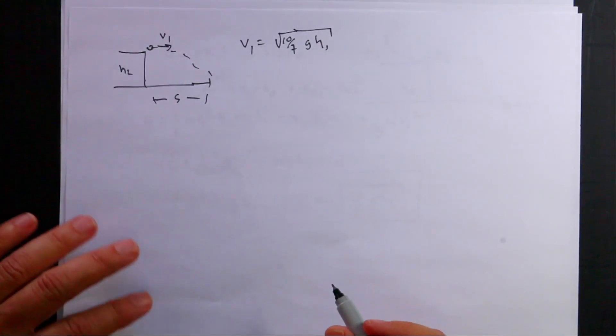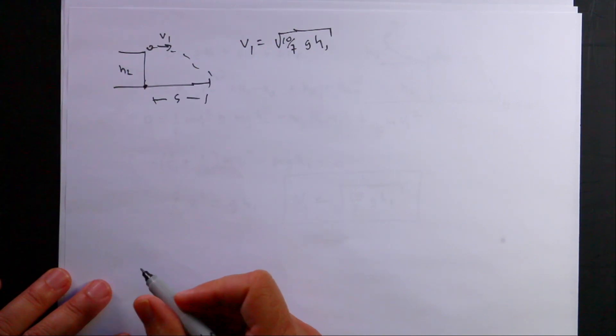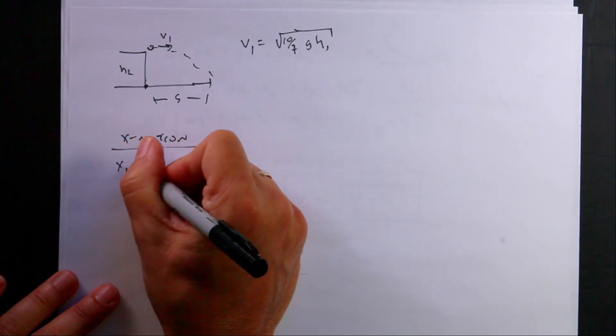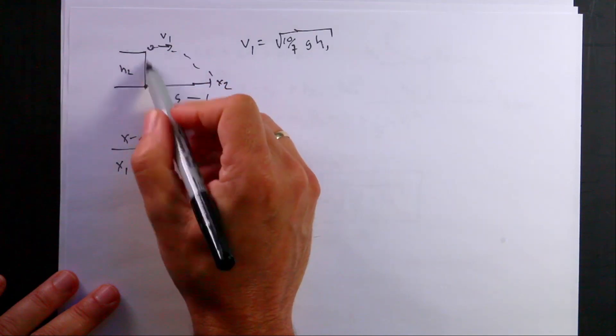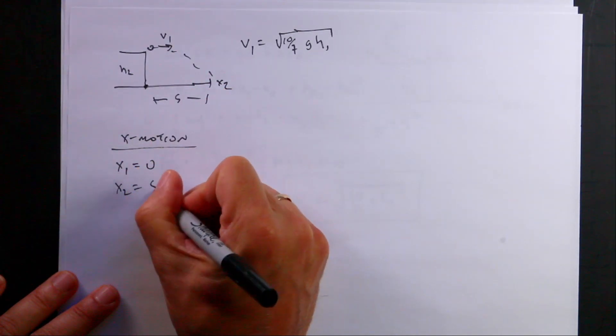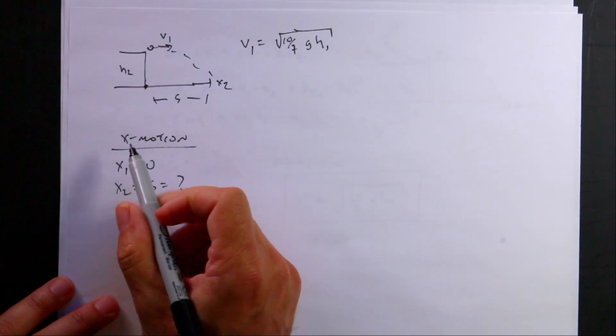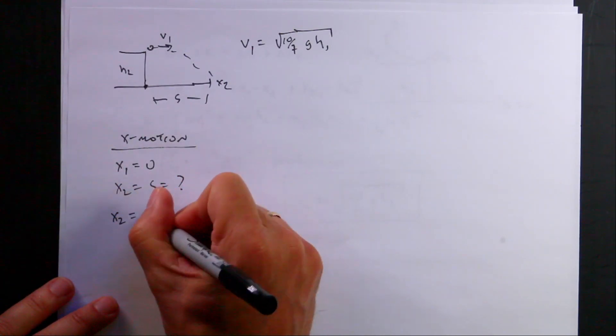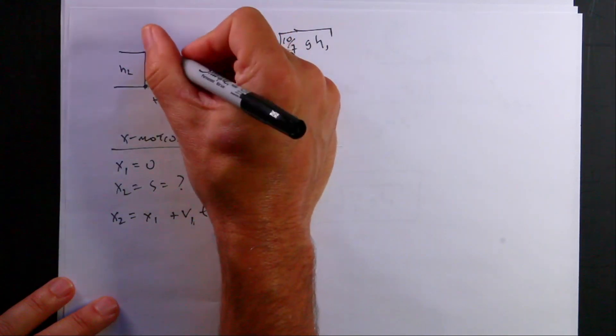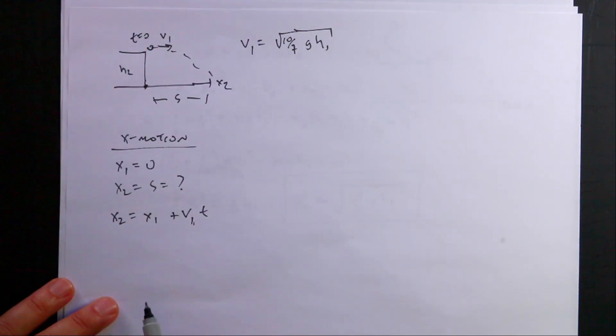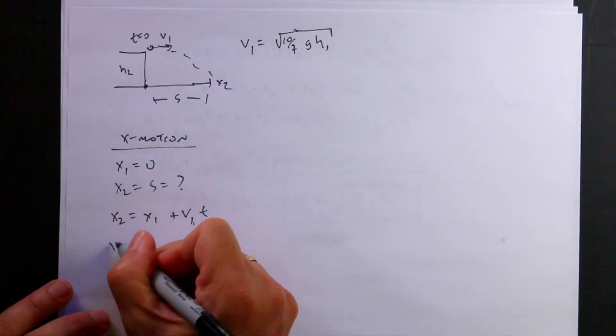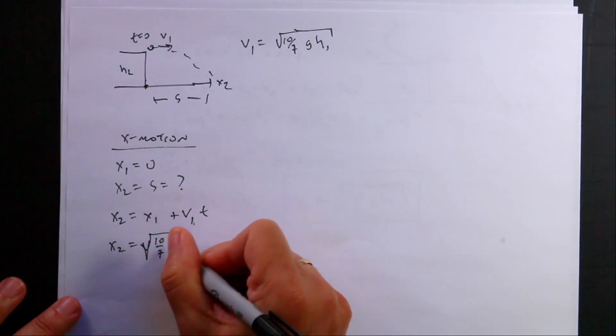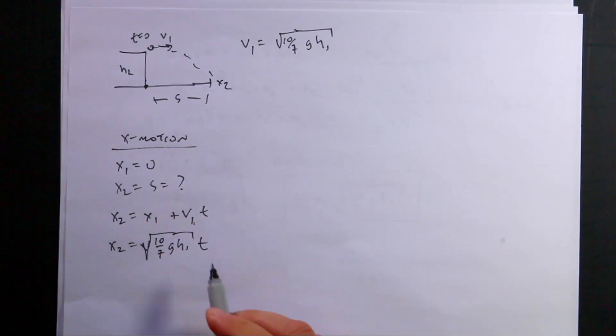Okay, so in projectile motion, I can break this into an x and a y-coordinate, y-motion, and that's my origin right there. So I can say x-motion, my initial x, x1, this is the final x is x2, x1 is zero, starts at x equals zero. x2 equals s, we don't know, we're trying to find that. And then since the acceleration is zero in the x-direction, there's no forces in the x-direction, I can say x2 equals x1 plus v1 t. So this is assuming t equals zero at that starting point. Now I don't know t. I do know v1. I can write this as x2, x1 is zero, so I get the square root of ten-sevenths g h1 t. So I just need to find t, so let's move to the y-motion.